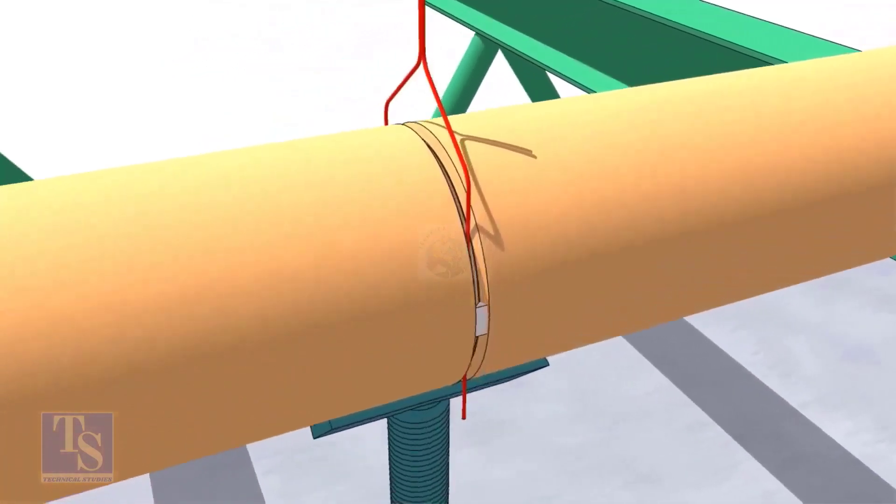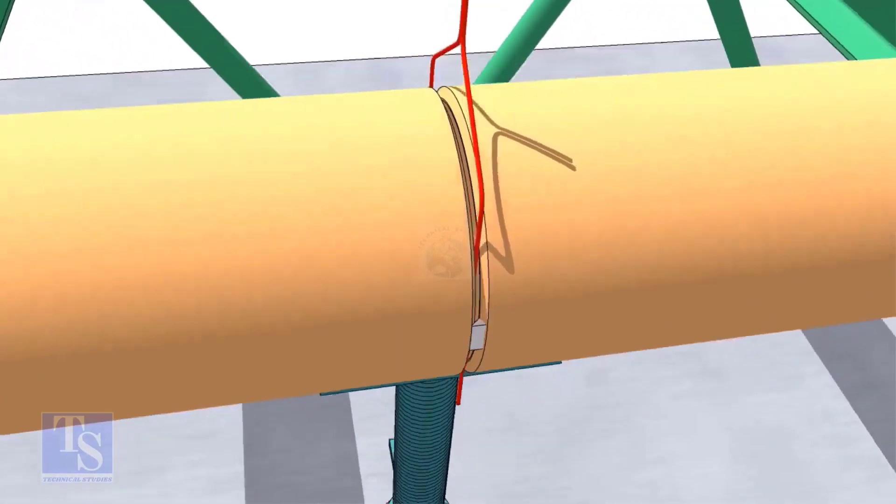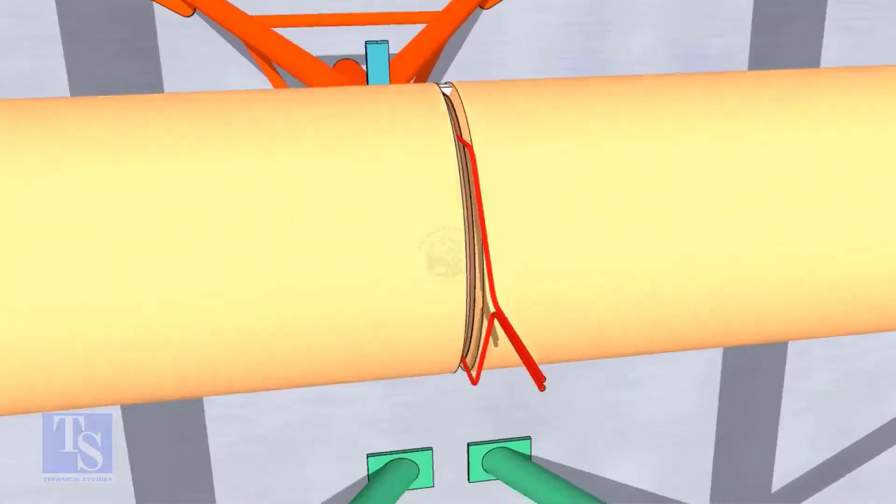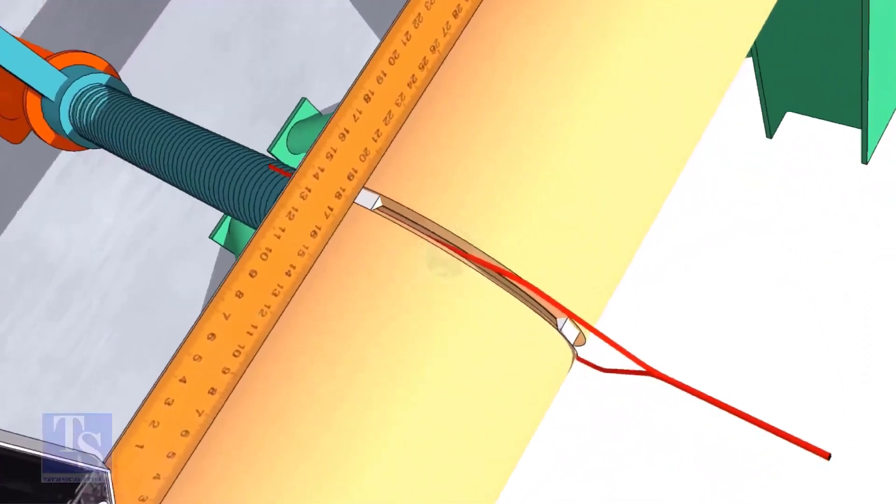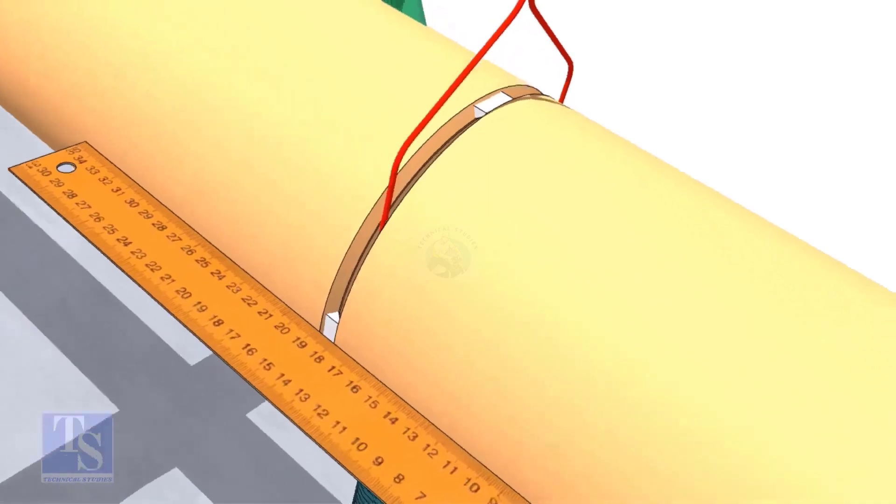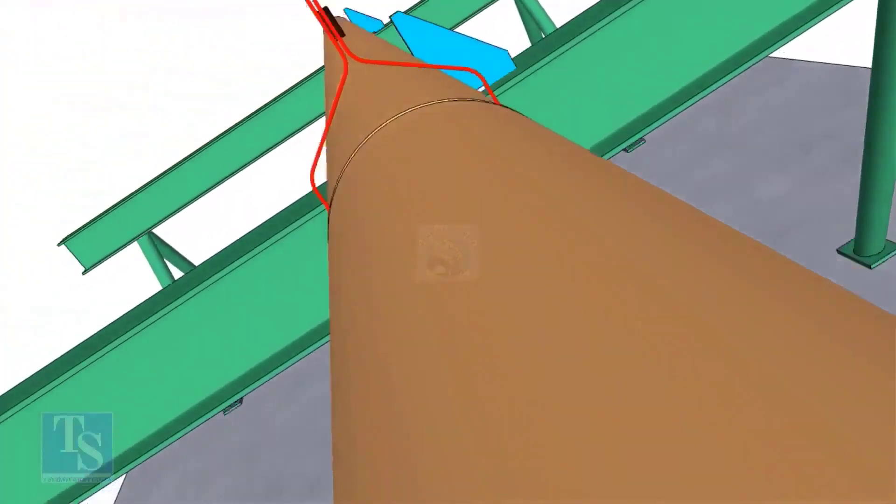Tack weld on both sides of the pipe, then the top and bottom of the joint. Don't forget to cross-check the overlap.